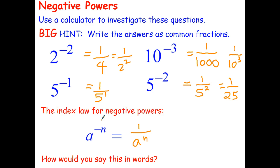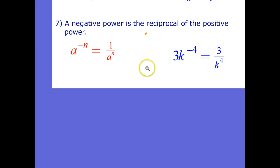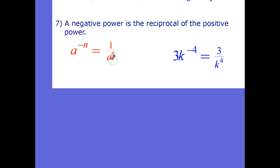Now how do you think you would say that in words? You might want to stop the video and have a think about it. Here's a hint — it's going to use the word reciprocal, because we're using reciprocals here. Looking at index law number 7: a negative power is the reciprocal of the positive power. So we have a negative power equals 1 over the positive power. For example, 3 multiplied by k to the negative 4 — well, the 3 stays on top and the k to the negative 4 becomes 1 over k to the positive 4.